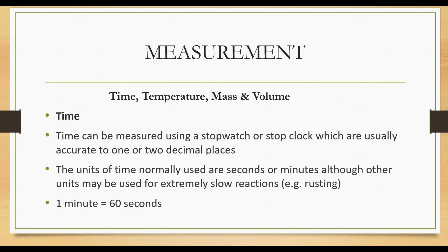An example of a slow reaction is rusting. Other units include microseconds, nanoseconds, and milliseconds. One minute equals 60 seconds. The apparatus used to measure time is a digital stopwatch or stop clock, and it measures up to 0.01 seconds.